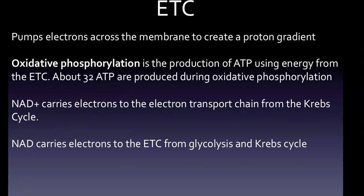The electron transport chain pumps electrons across the membrane to create a proton gradient, and electrons move from one carrier molecule to the next. Oxidative phosphorylation is the production of ATP using energy from the electron transport chain.